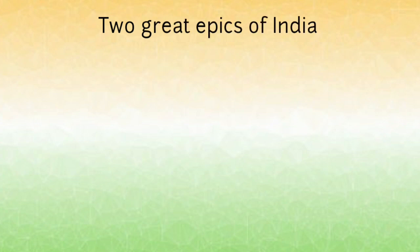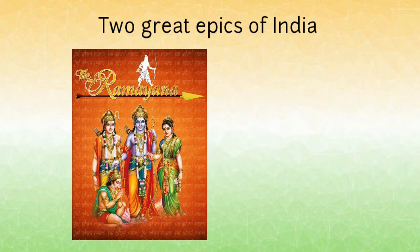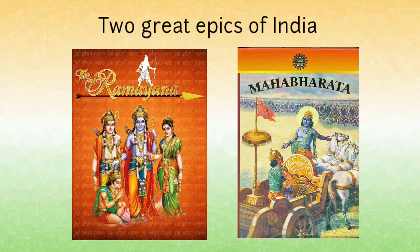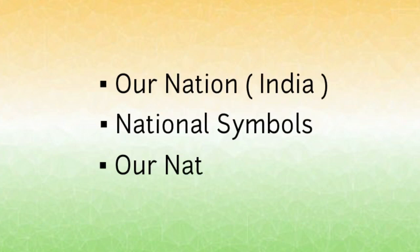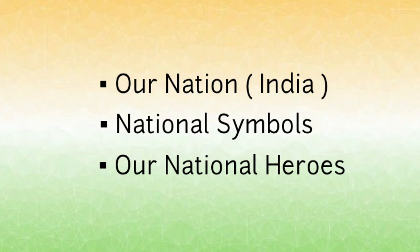Children, there are many religious books read by people of different religions, but there are two great epics of India — the Ramayana and the Mahabharata — which provide us valuable knowledge full of devotion and truthfulness, and also teach us many moral values. In this lesson we have learned about our nation, its national symbols, our national heroes, and the brave freedom fighters because of whom we got our freedom.